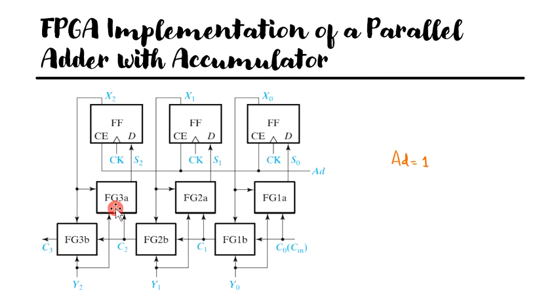So if the fast carry logic is used, the bottom row, this entire bottom row of function generators can be eliminated. And a parallel adder with an accumulator can be implemented using only one function generator for each bit instead of making use of a total of six function generators for the implementation of three bit parallel adder with accumulator. So let's see you in the next video.